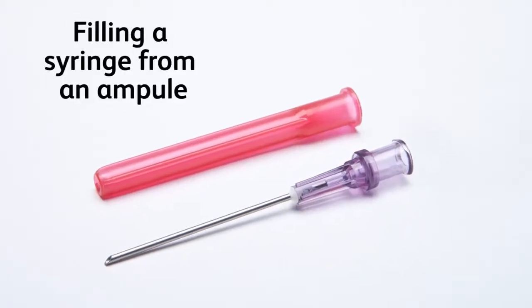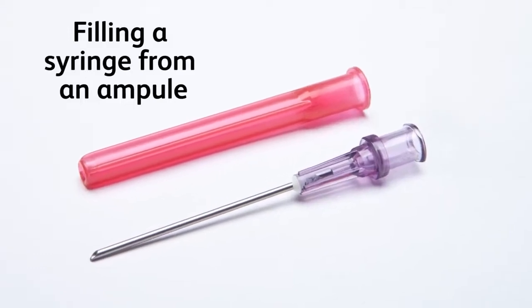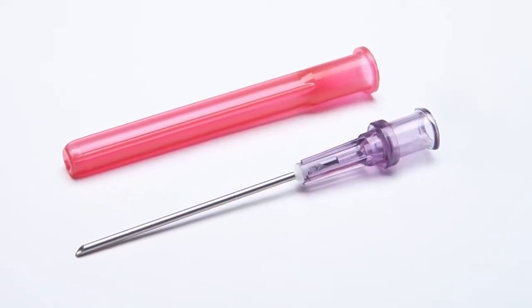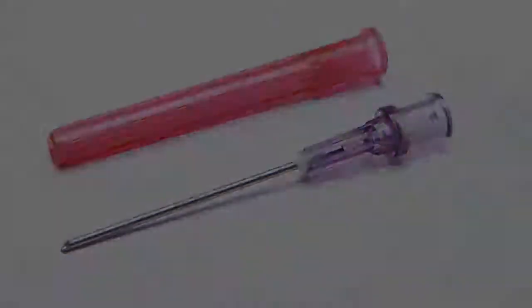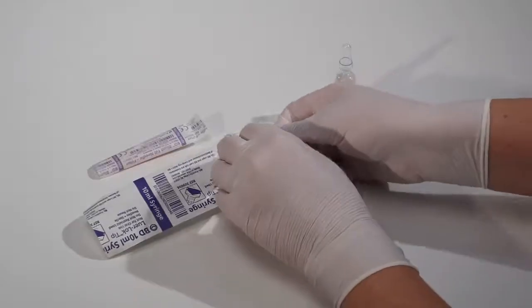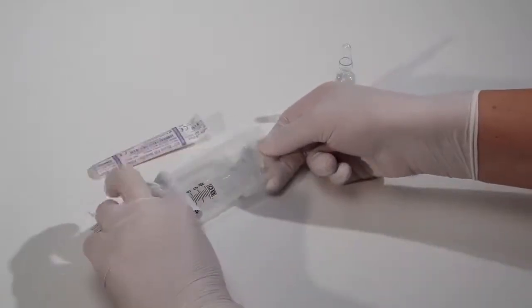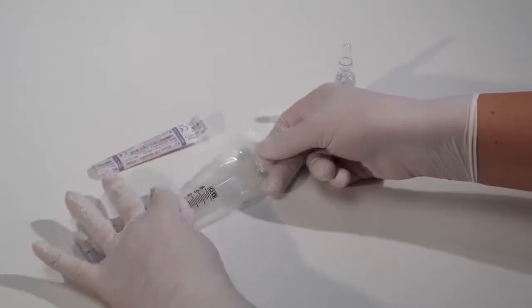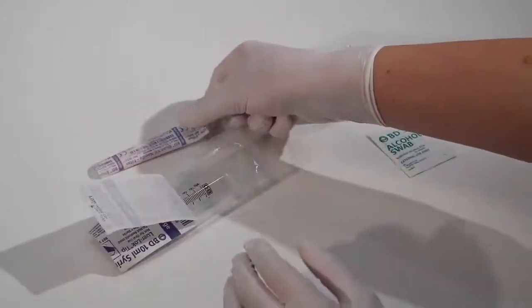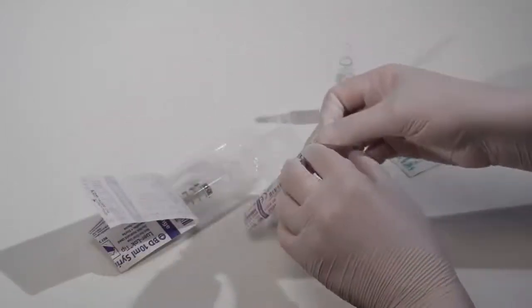Sometimes a clinician needs to remove medication from an ampoule. To do this, you'll need a blunt filter needle rather than a blunt fill needle. Open the syringe and blunt filter needle packages by holding the peel tabs and peeling them back only far enough to expose the hub of the needle or the plunger rod of the syringe.